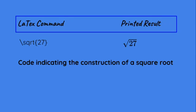This is the code indicating the construction of a square root. As you can see, inside the curly brackets, 27 is the number that's going to be underneath the radical.